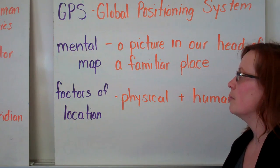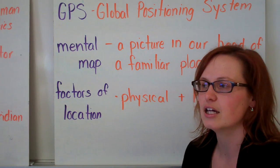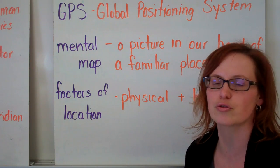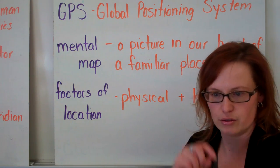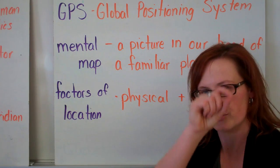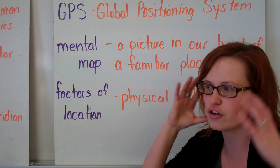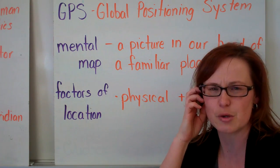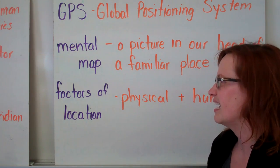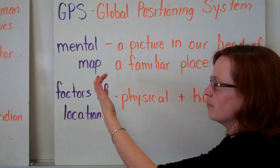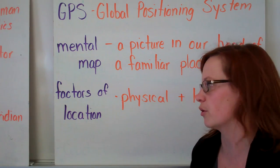Mental map. A mental map is a picture we have in our heads of a familiar place. So if anyone has ever said to you, can you draw me a map of how to get to your house? And you can just do it — you draw the school, the streets, the streetlights — because you've walked that route so many times that you have a mental image of it and can recreate it. It's usually with something that we're very familiar with.